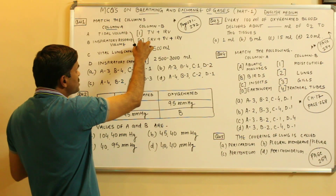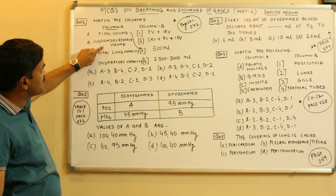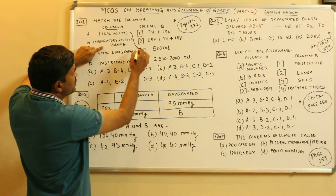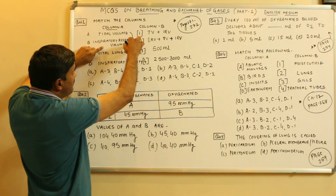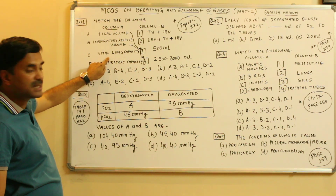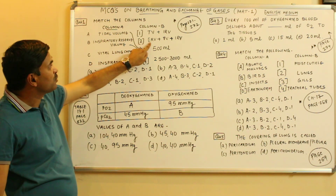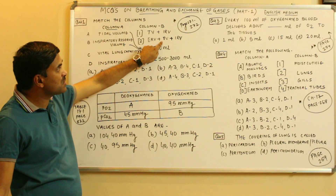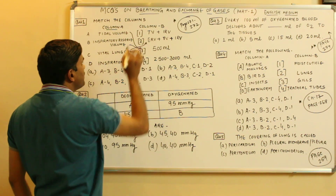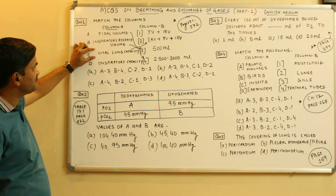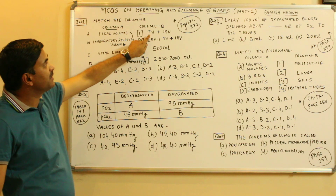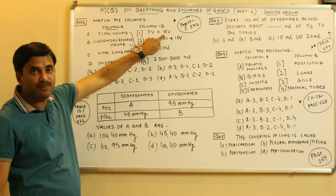So A is matched with 3. Inspiratory reserve volume is 2500 to 3000 ml, so it is matched with 4. Vital lung capacity is expiratory reserve volume plus tidal volume plus inspiratory reserve volume. And inspiratory capacity is tidal volume plus inspiratory reserve volume.